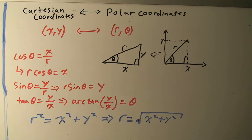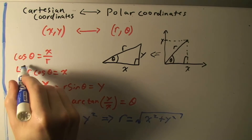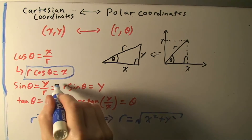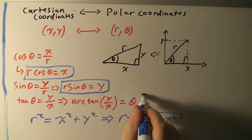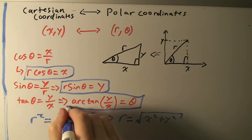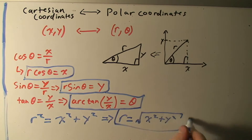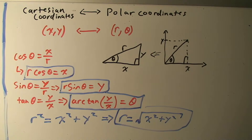This is really easy. If you're given Cartesian coordinates you can convert to polar, and from polar back to Cartesian, using these four formulas. If you forgot them on an exam you could derive them, but it's faster to just memorize them. Let's do an example.